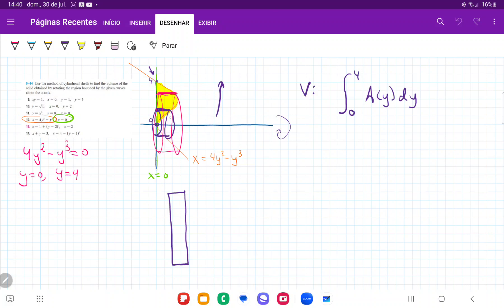the cylinders, they get bigger and bigger. So this is definitely an area that changes as a function of y. And so that is A(y).